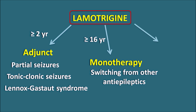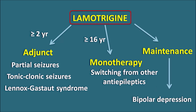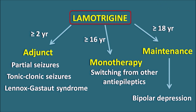Lamotrigine can also be used for maintenance therapy, particularly in bipolar depression, where this drug can delay mood swings from depression to mania. Here lamotrigine is used in patients aged greater than or equal to 18 years. In this way lamotrigine can be used for adjunctive therapy, monotherapy, as well as maintenance therapy. However, this drug can produce fatal hypersensitivity reactions which limit its use, so it is given when other drugs are less effective or cannot be used due to side effects.